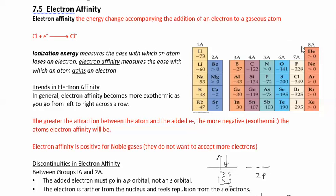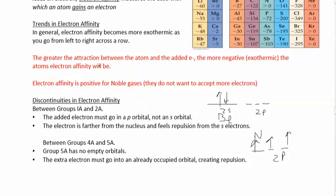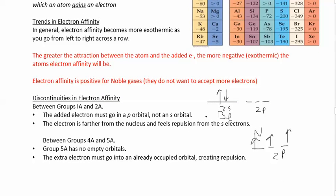So exothermic electron affinity for halogens, noble gases don't want to do anything, and that's fine. So let's look at, here we go, trends. Alright, so discontinuities here.